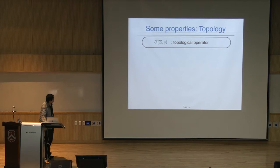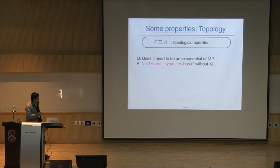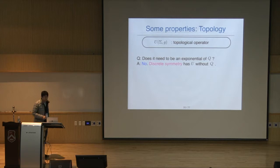First: does this operator need to be an exponential of some charge? The answer is no. Discrete symmetry has this operator U without the charge — in the case of discrete symmetry, we don't have any conserved current, but we still have a symmetry. We don't have Q, but we still have U.